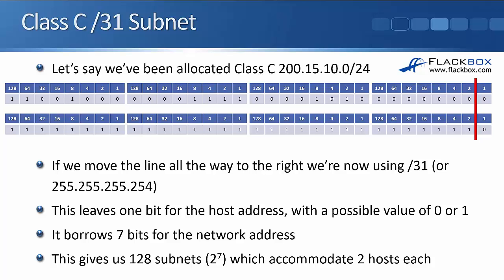If we wrote that subnet mask in dotted decimal notation, it would be 255.255.255.254. We get the 254 because it's 128 plus 64, 32, 16, 8, 4, plus 2, which comes up to 254. So that leaves one bit for the host address, which has obviously got a possible value of a 1 or a 0.